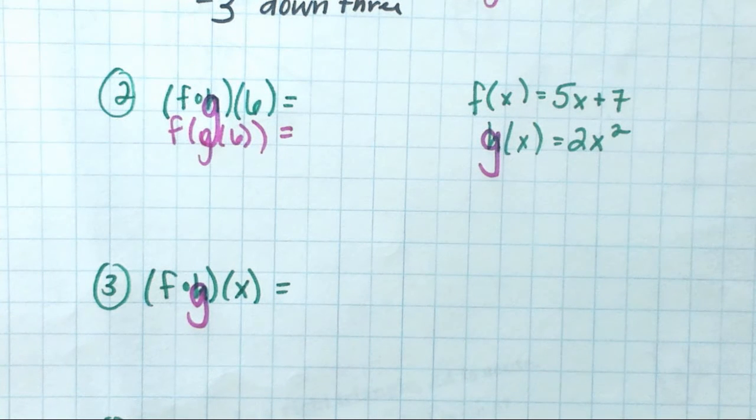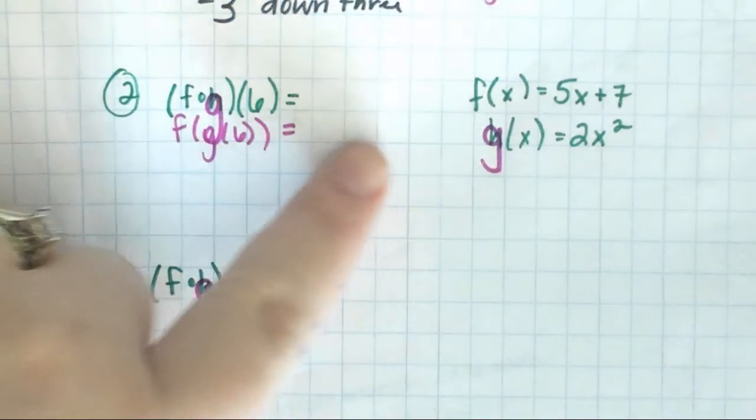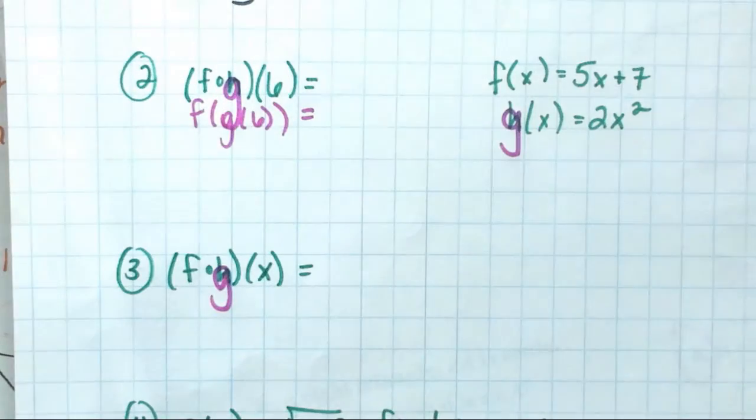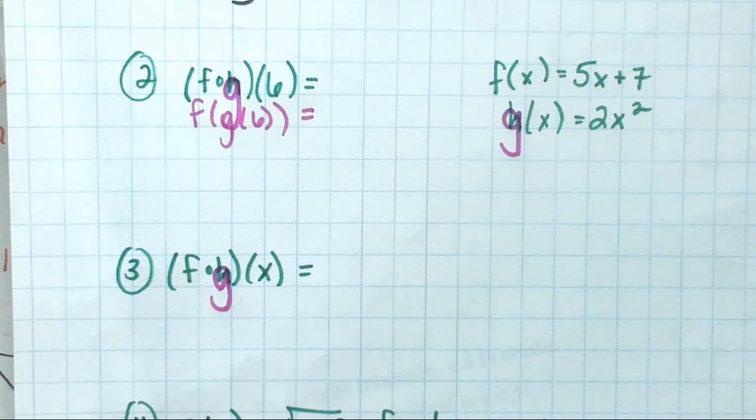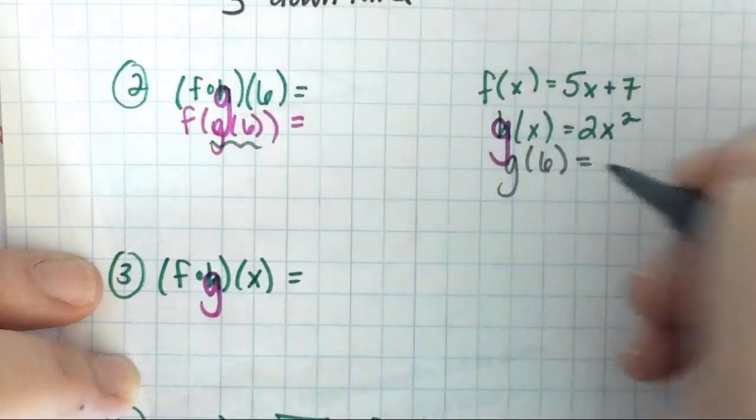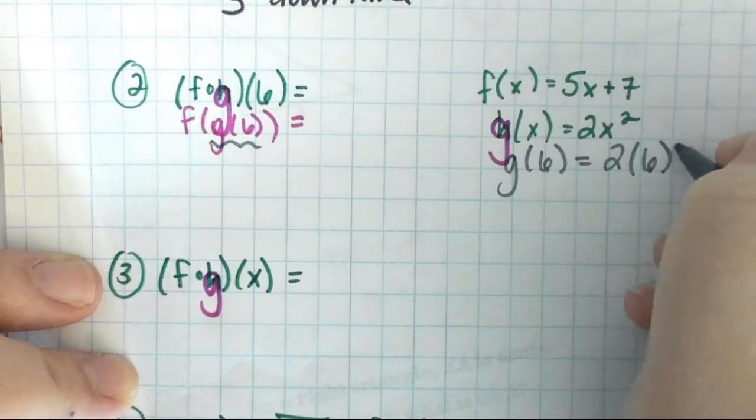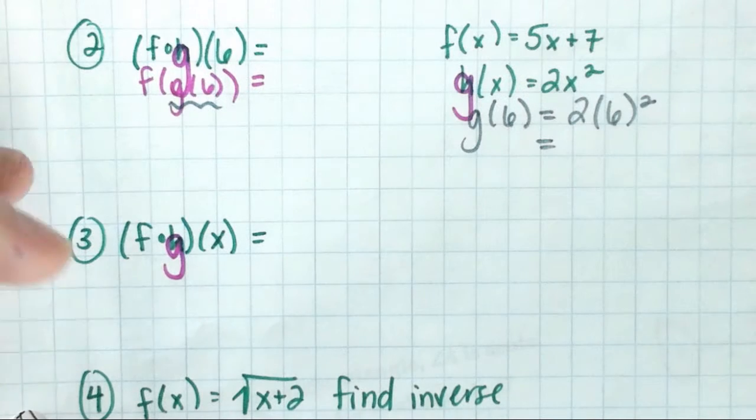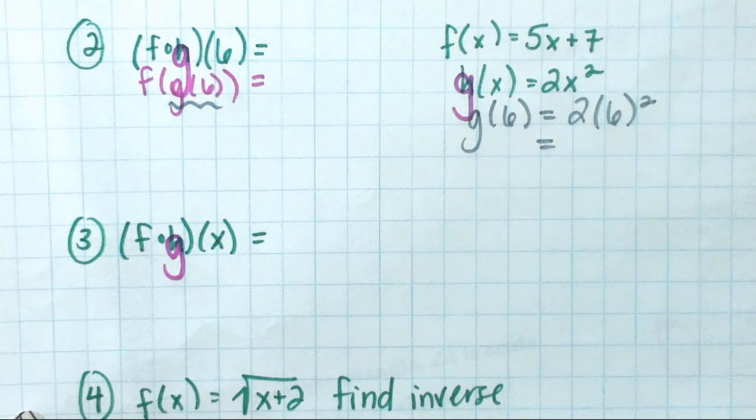So F composed with G of X. We're doing F composed with G of 6. So I need to know what do I do with the 6. Do I take the 6 and plug it into the 2X squared? Do I take the 6 and plug it into the 5X plus 7? Where does the 6 go? Do you plug it into the G and then put the G into the F? Two points for Landon's group. We're supposed to actually find G at 6, meaning everywhere in G I see an X, I put 6.